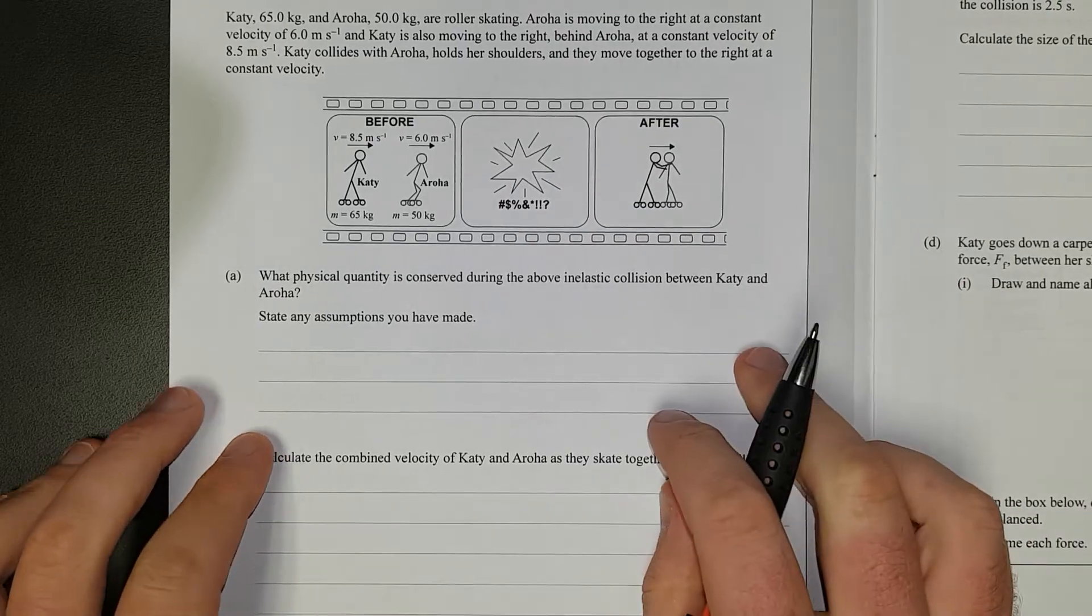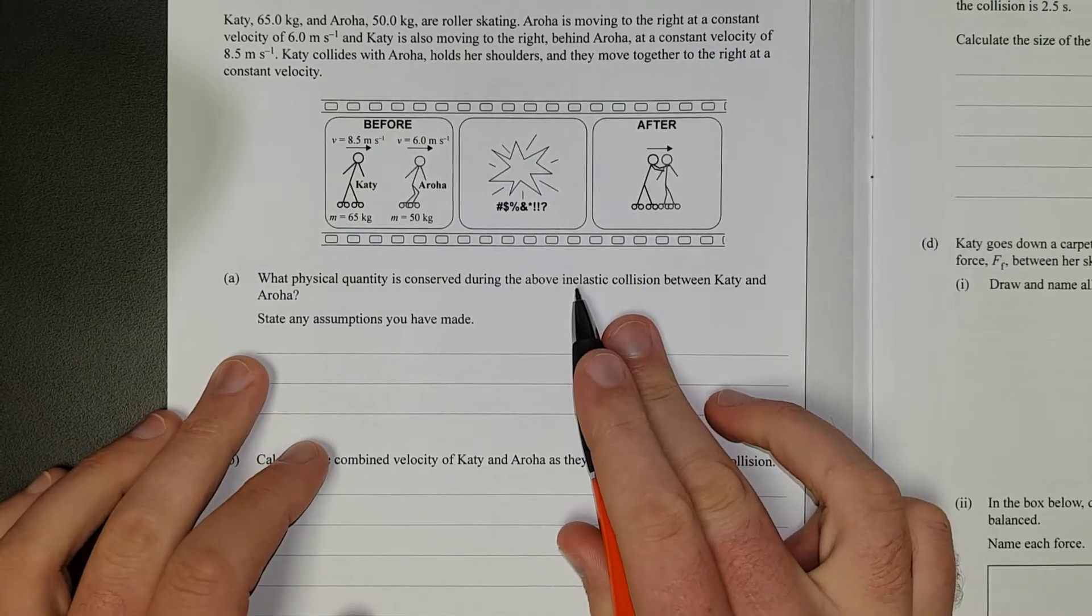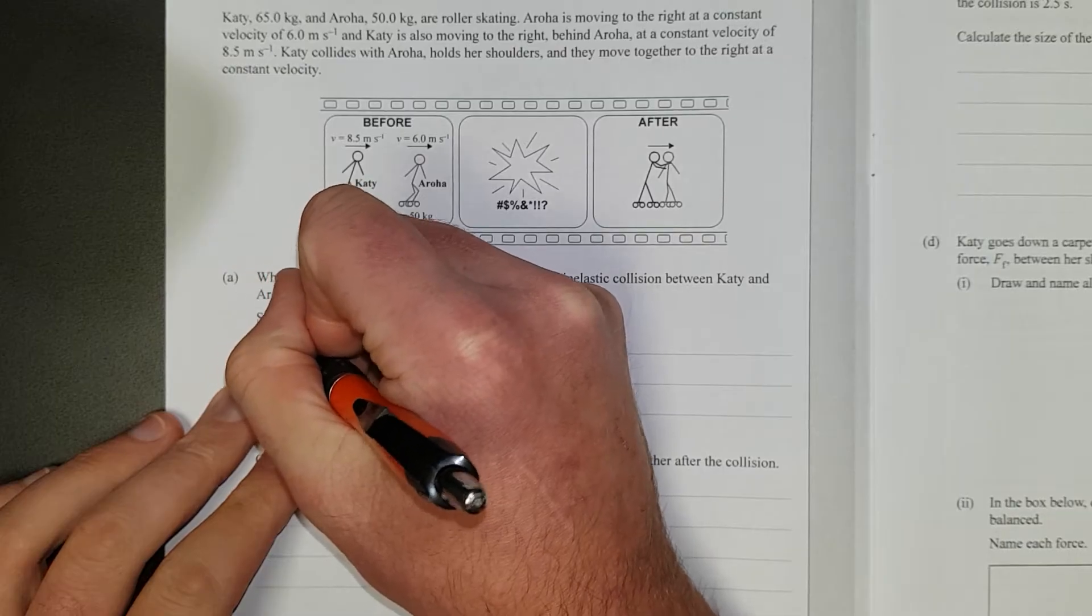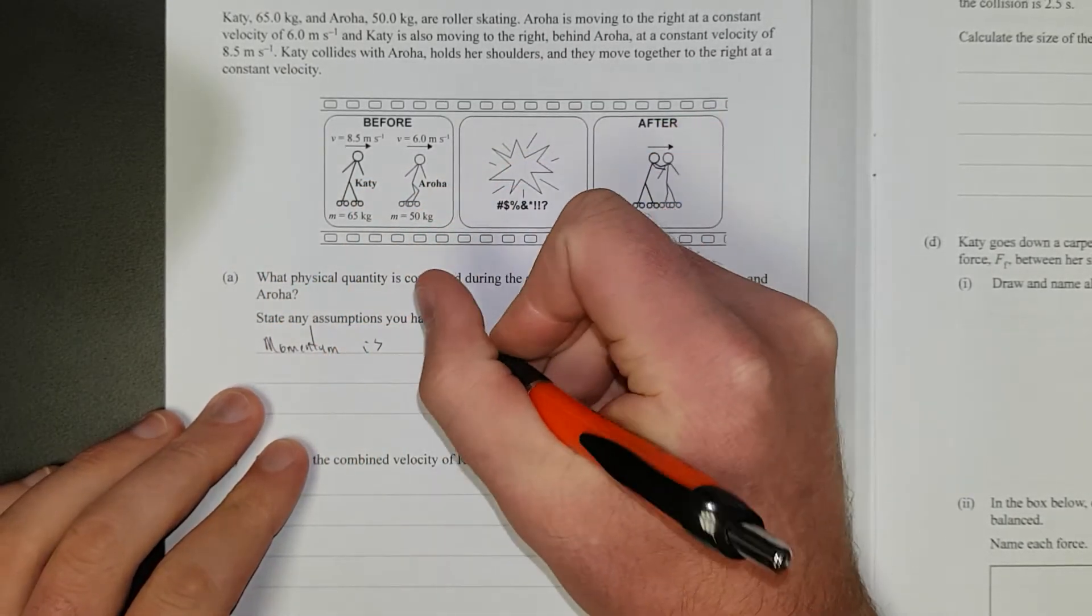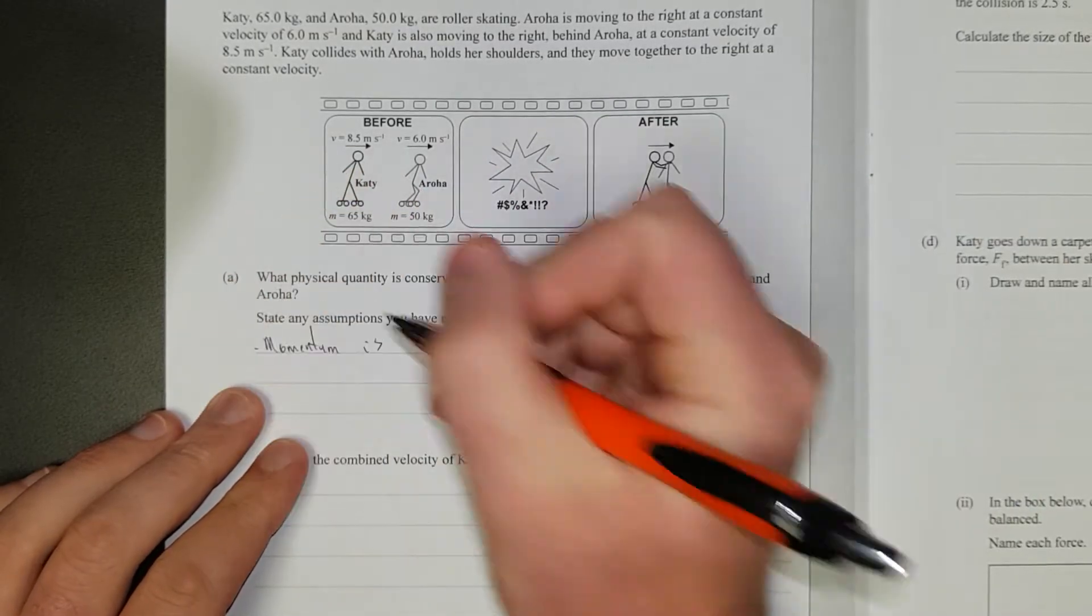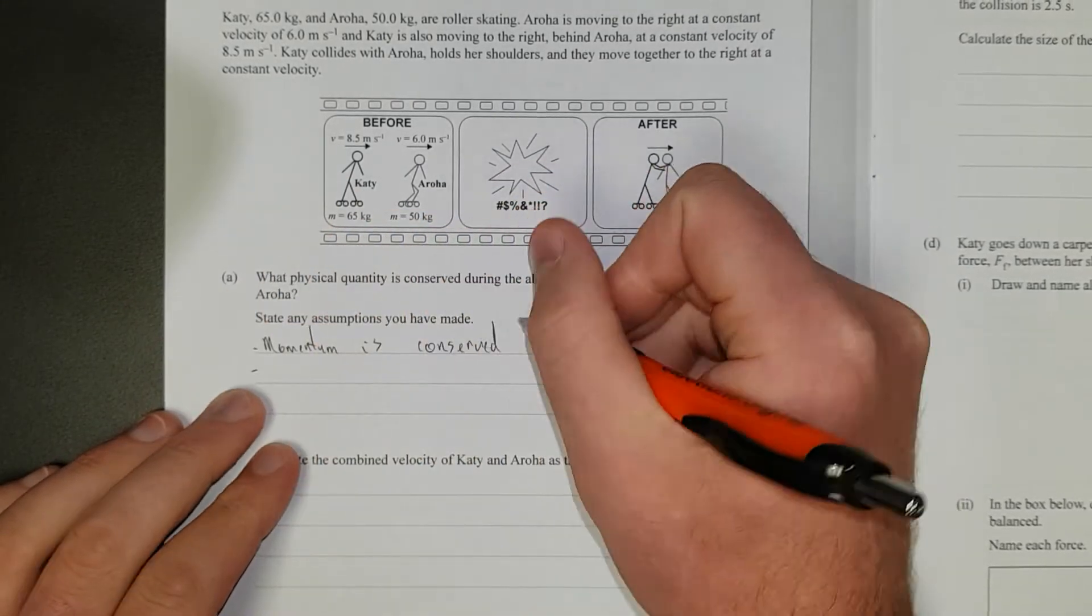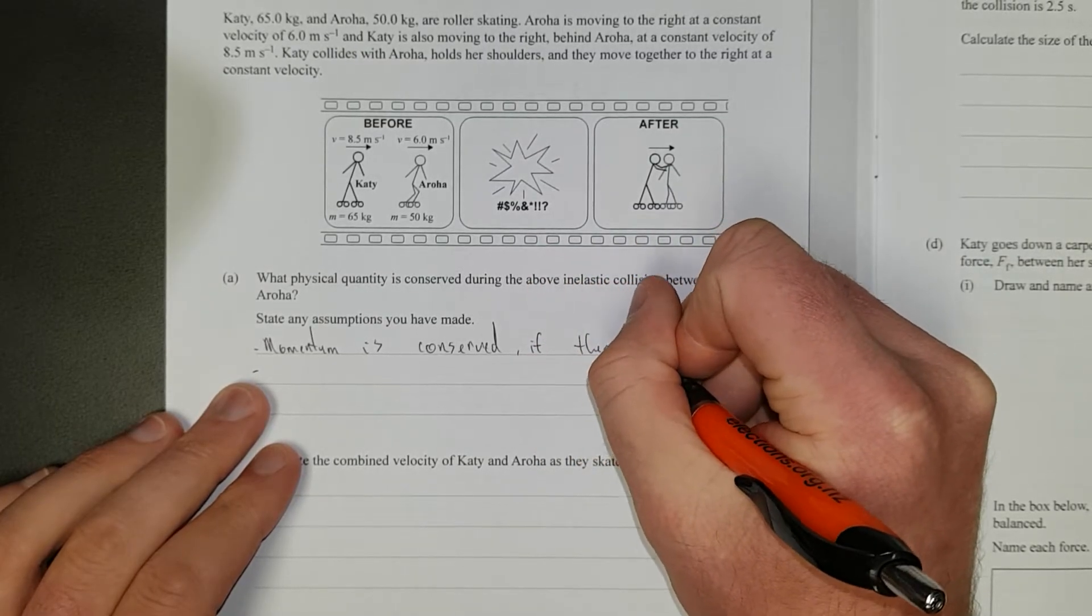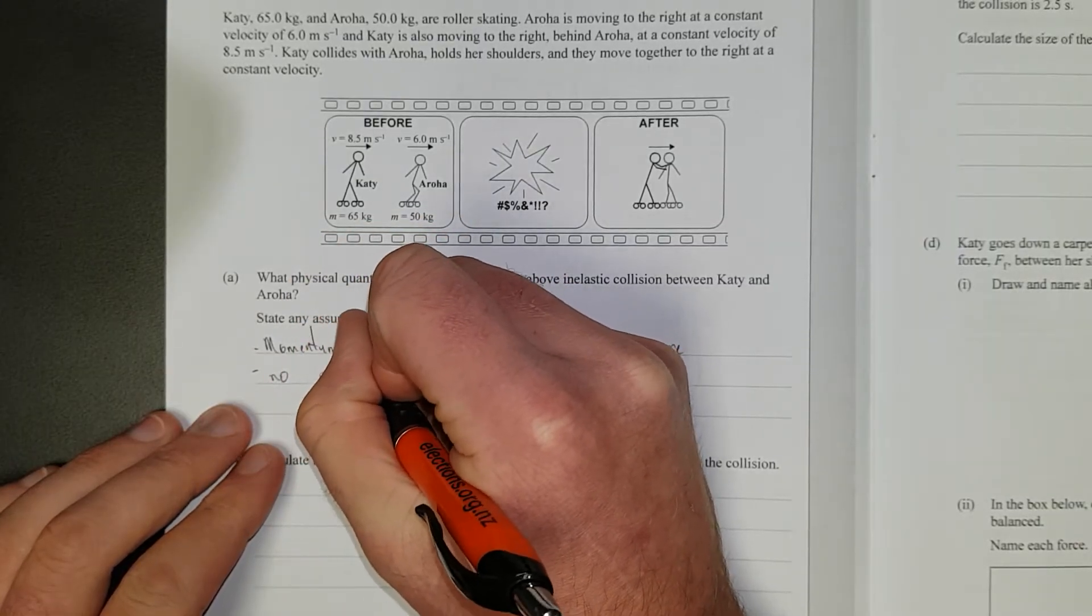So, it's momentum that's conserved because it's inelastic. If it was elastic, it would be momentum and energy. So we'll state that here. So, as I said, momentum is conserved if there are no external forces.